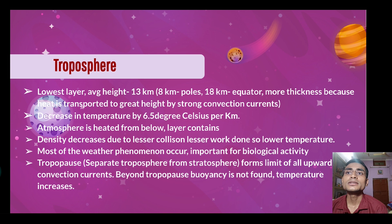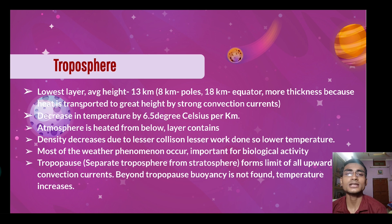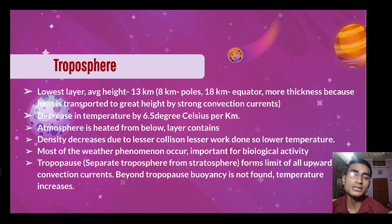In the troposphere, temperature decreases at a rate of 6.5 degrees Celsius per kilometer as you go up. For every 1 km you go up, 6.5 degrees of temperature is lost — so the temperature keeps decreasing.